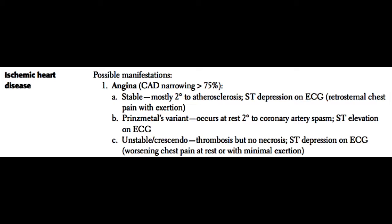Unstable or crescendo angina is generally characterized as pain with rest or pain that is worsening with time. These patients usually have not only atherosclerosis, but also a small amount of ulceration or thrombosis on top of their coronary plaque. Unstable angina is different than infarct, however, because these patients have not yet begun to necrose their myocardium.